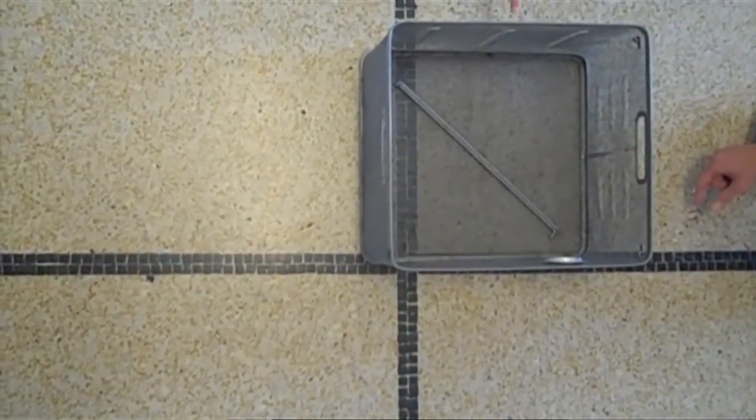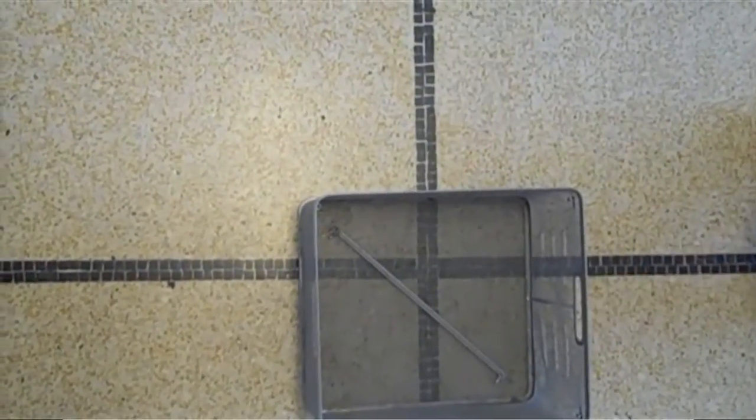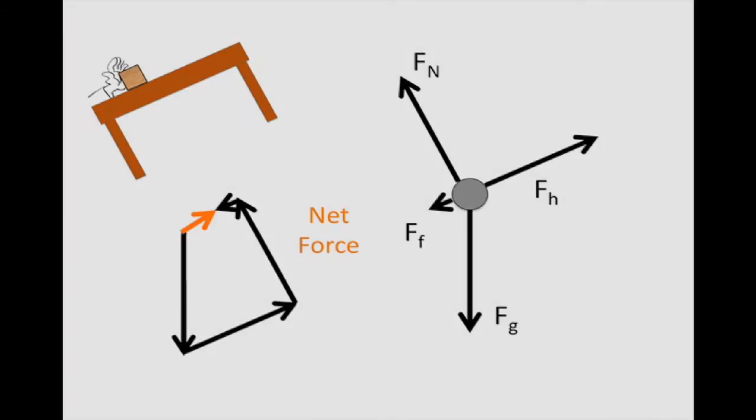We think of forces as being small or large. We can increase them and decrease them. Force seems to have magnitude and direction. When we draw a free body diagram, we are implicitly assuming that forces are vectors and they add like vectors. But how do we know this? We do an experiment.